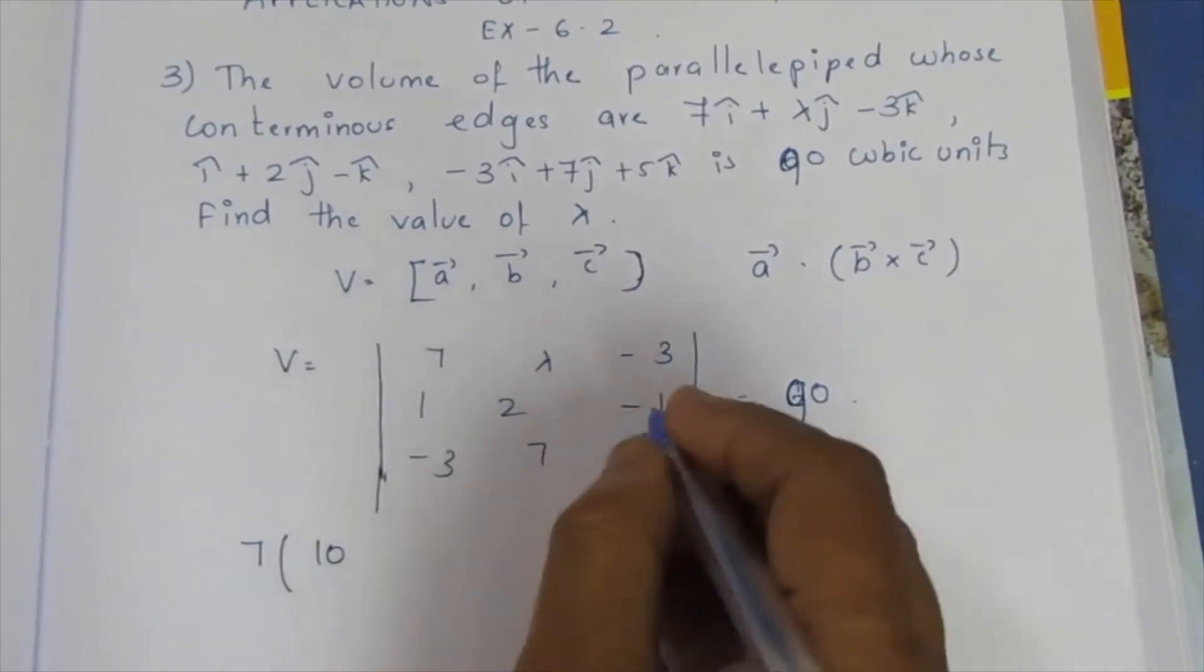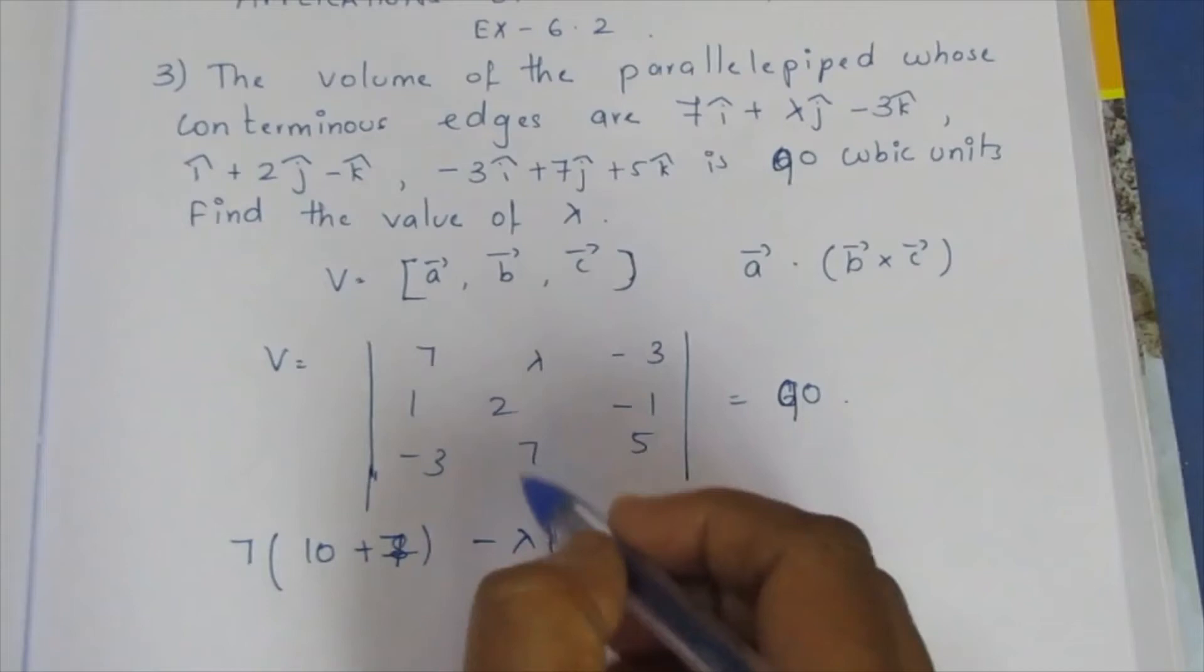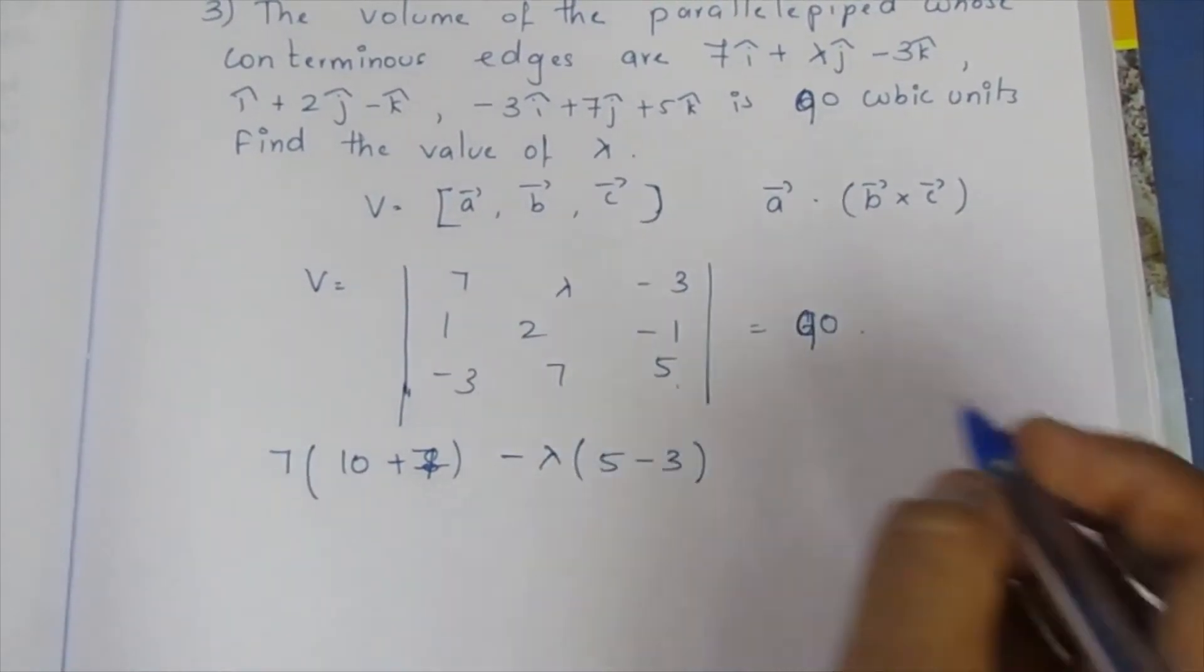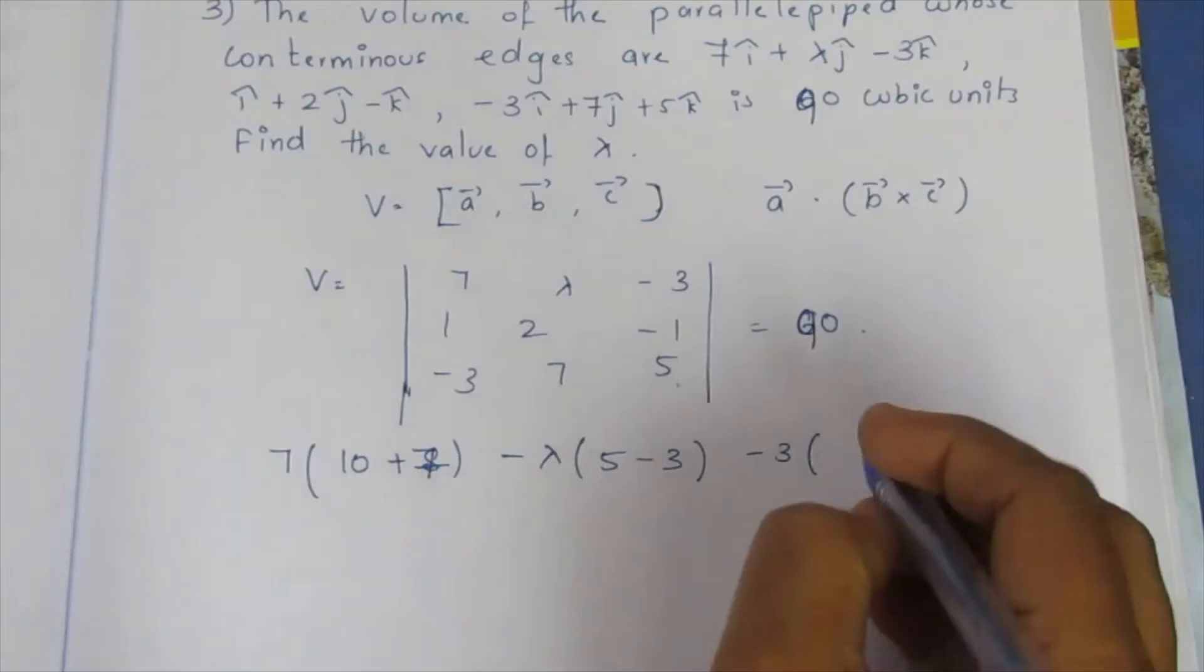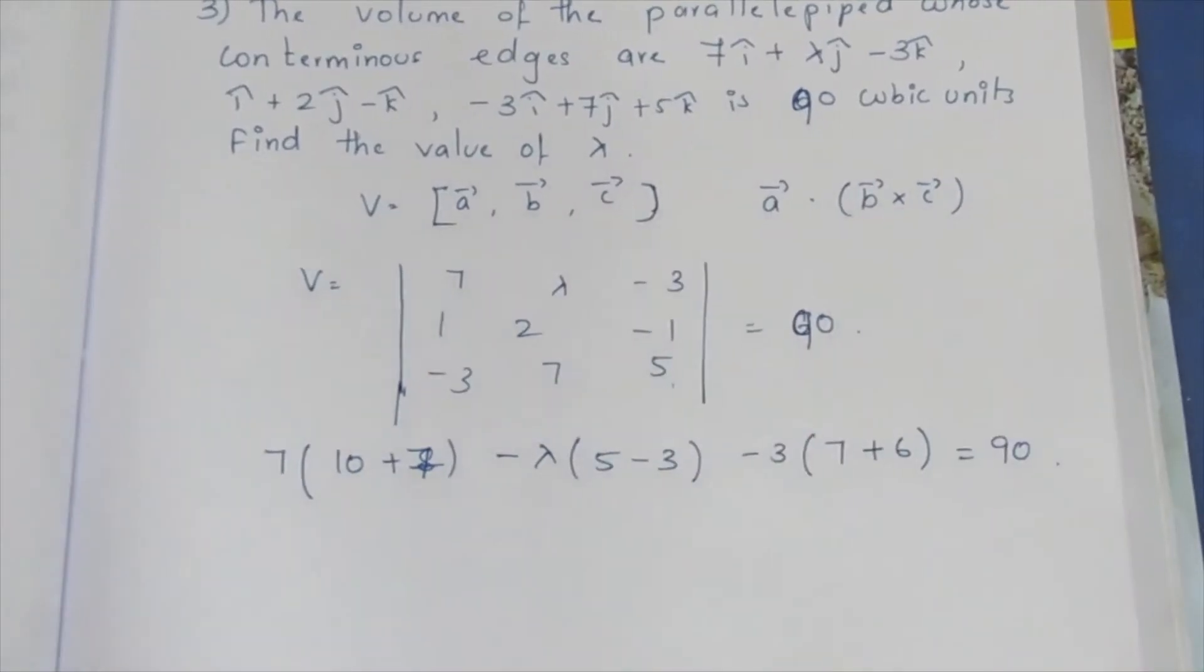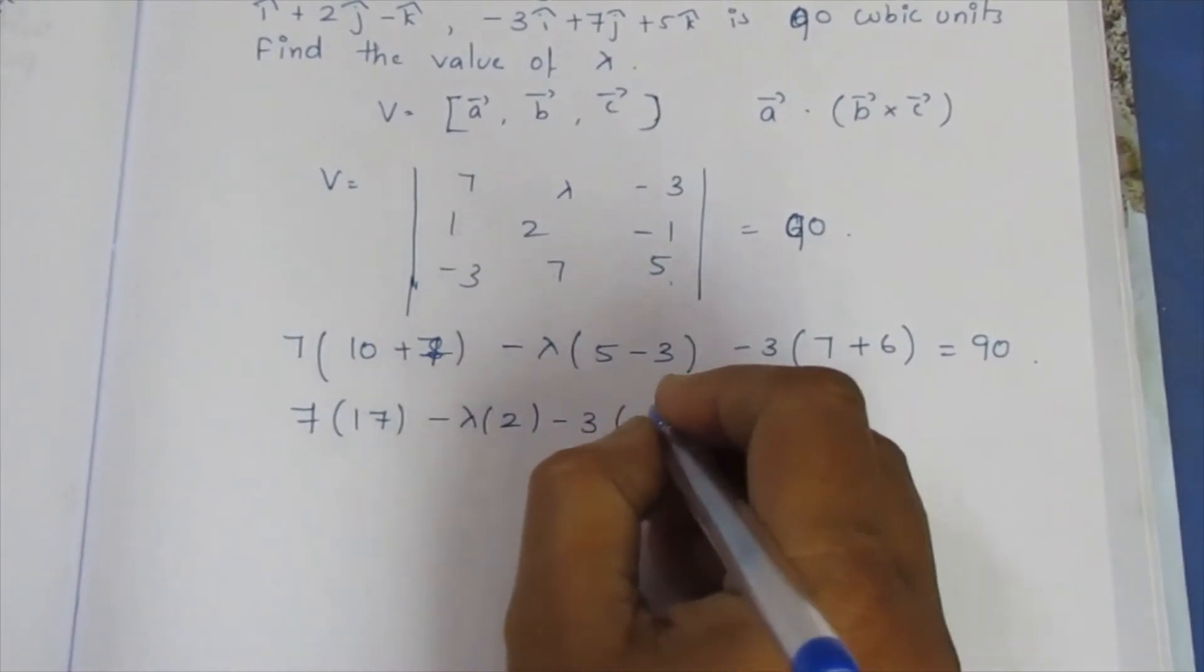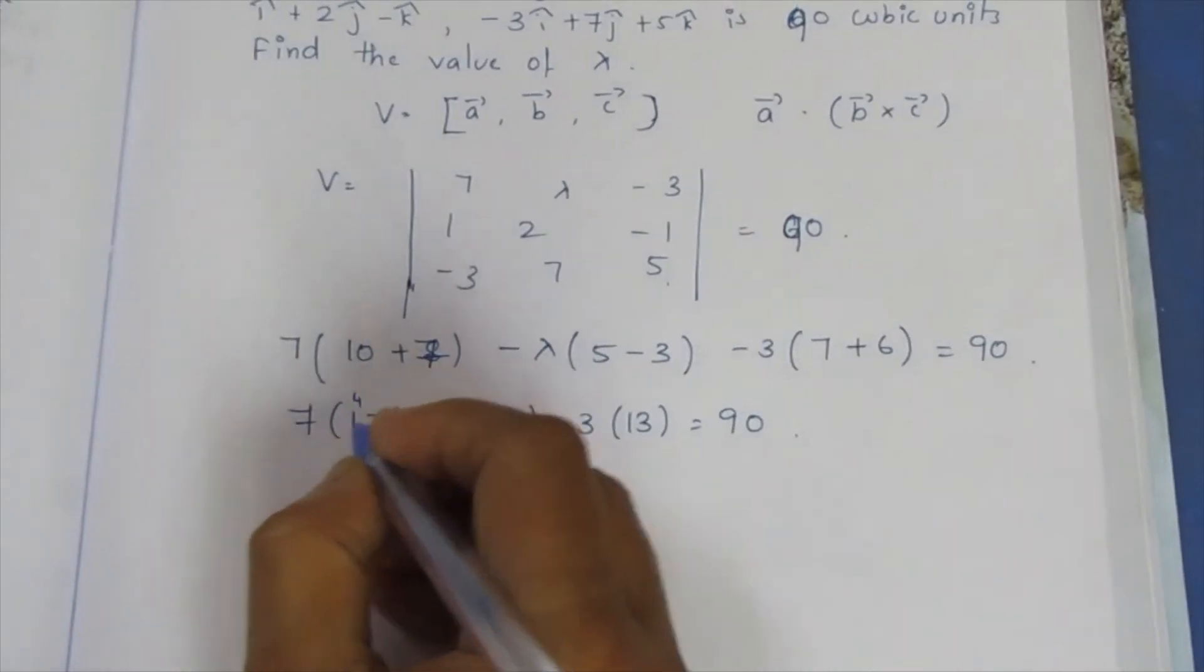Multiply: 5 times 2 is 10 minus plus 7 times 1 is 7. Minus lambda. Minus. 7 minus minus 3. 2 times 3 is 6 equal to 7 times 10 is 70.